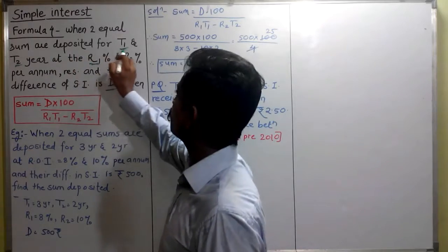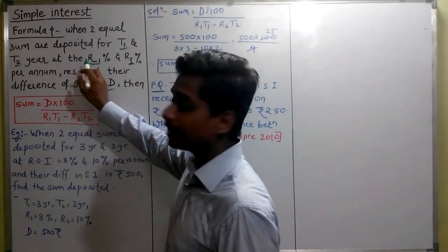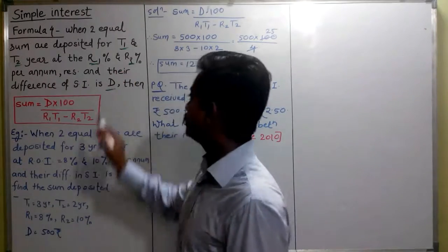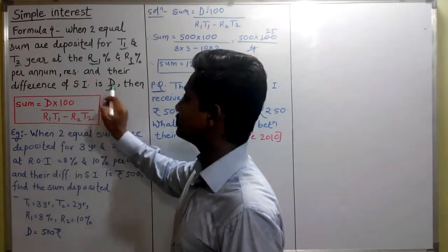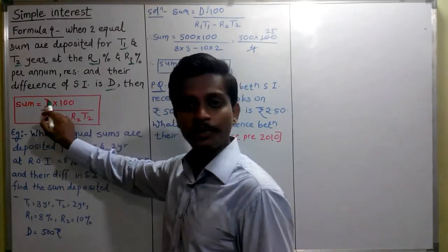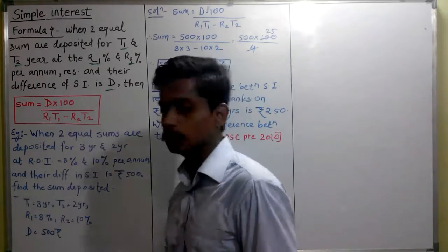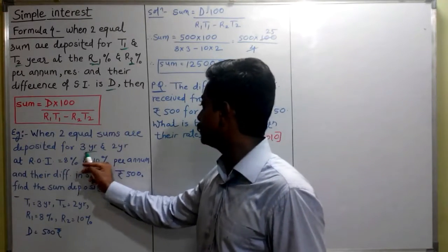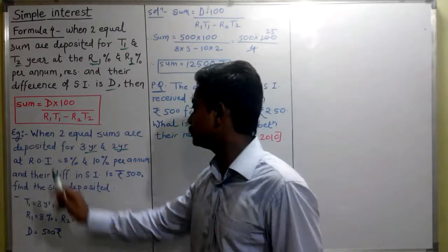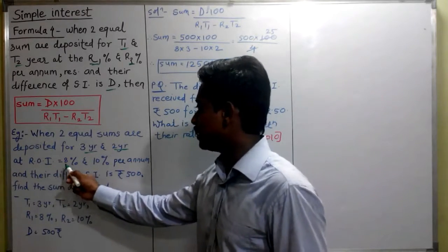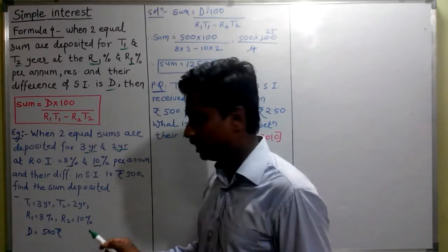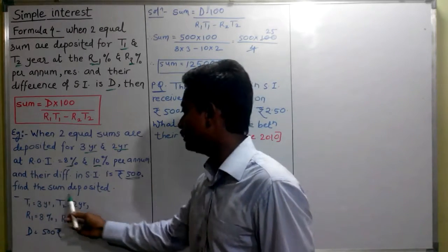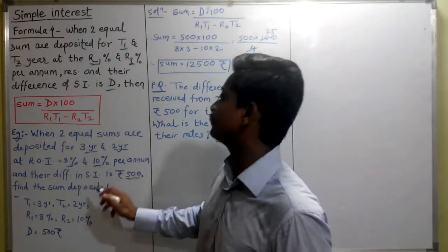Formula 4: When 2 equal sums are deposited for T1 and T2 years at the rate of interest R1 percent and R2 percent per annum respectively, then sum is equal to D into 100 divided by (R1T1 minus R2T2). Let us consider one example. When 2 equal sums are deposited for 3 years and 2 years at rate of interest 8% and 10% per annum respectively, and the difference in SI is 500 rupees, find the sum deposited.